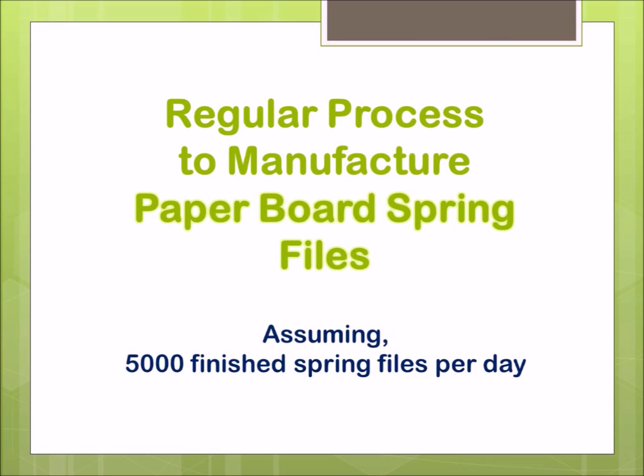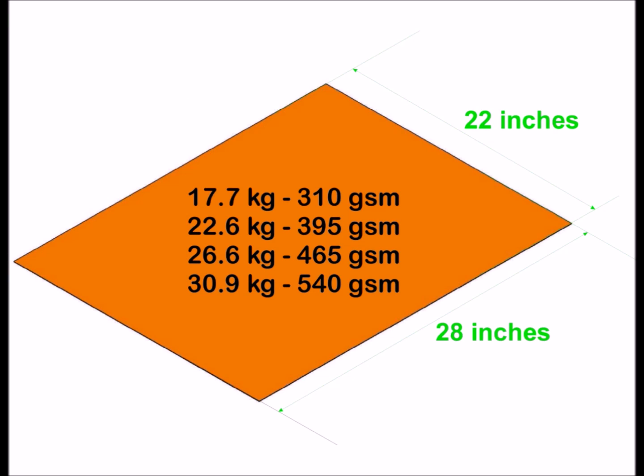Assume minimum capacity of producing 5000 quantity per day. We receive paper board from our supplier in the size of 22 inches by 28 inches in different thickness as shown in the image packed in a bundle.